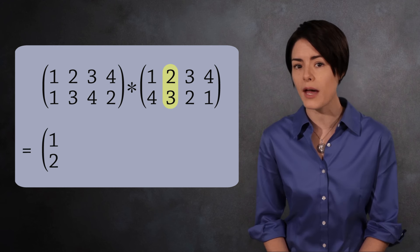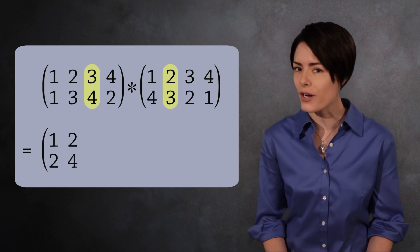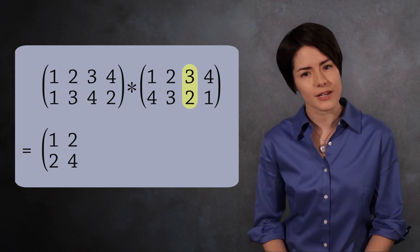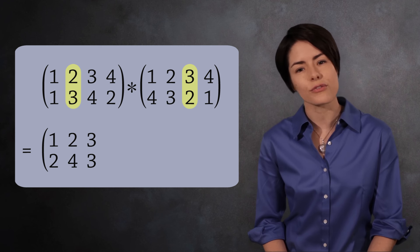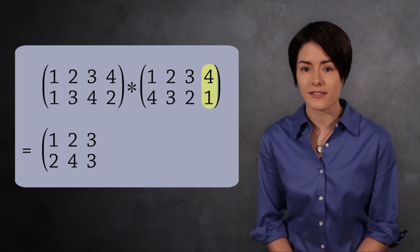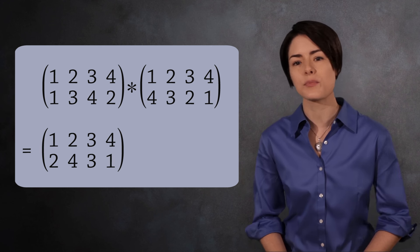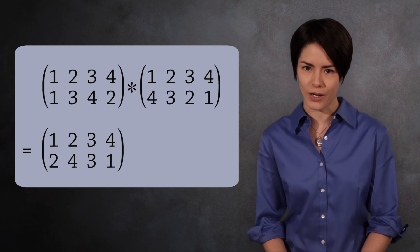Next, we see 2 maps to 3, and 3 maps to 4, so 2 maps to 4. 3 maps to 2, and 2 maps to 3, so 3 maps to 3. And finally, 4 maps to 1, and 1 maps to 1, so 4 maps to 1. The result is a permutation 2, 4, 3, 1.